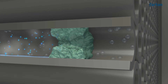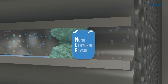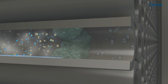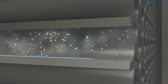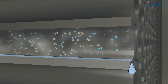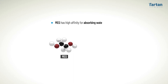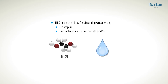That is why MEG, a chemical inhibitor, is injected into the exchanger and functions as an antifreeze. Although MEG has high affinity for absorbing water, it only does so when highly pure and its concentration is higher than 90 to 92 weight percent.